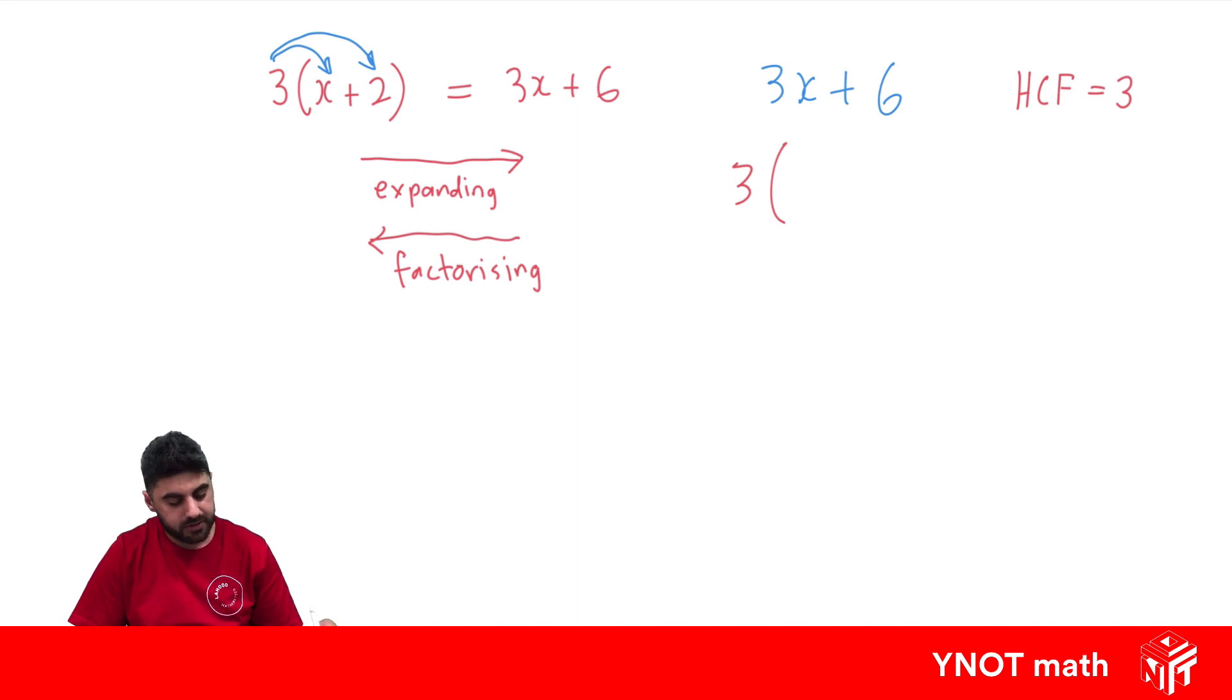And inside the bracket, we need to write the terms that if multiplied by that 3, give us these terms. So what do we need to multiply by 3 to give us 3x? We need to multiply by x, because 3 times x gives us 3x.